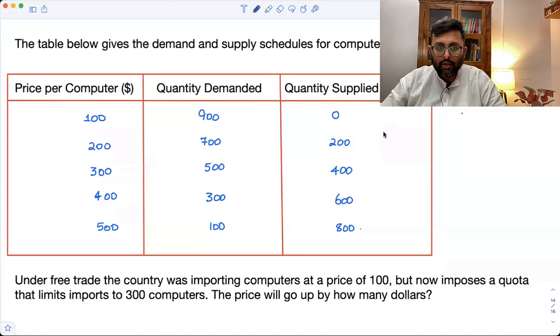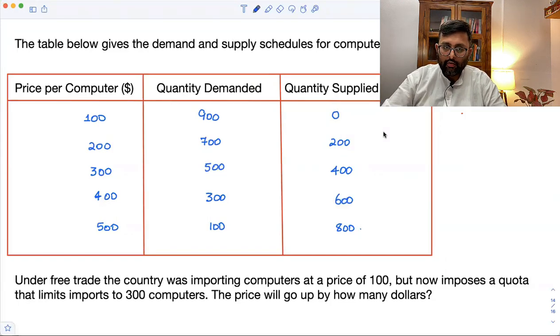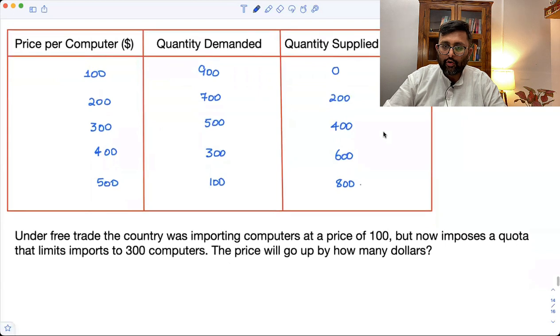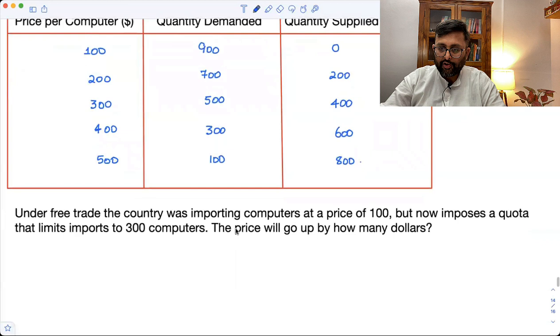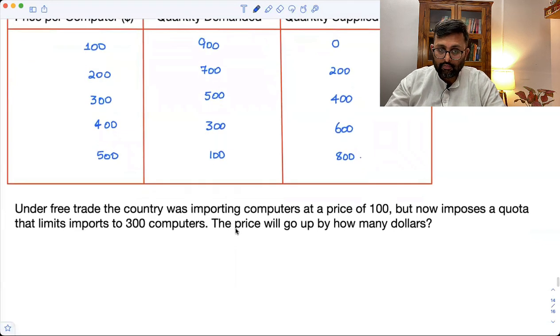Hello, Vida. Have a look at this question. So you were given with this table for demand and supply for computers. These are different prices. At these prices, this much is demanded and this much is supplied. Under free trade, the country was importing computers at a price of 100. But now it imposes a quota that limits the import to 300 computers. So the price will go up by how many dollars now?